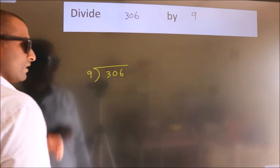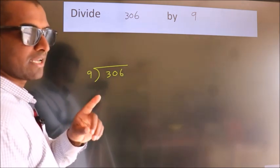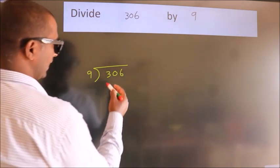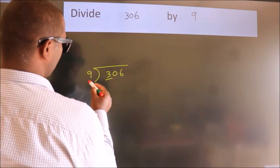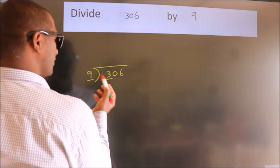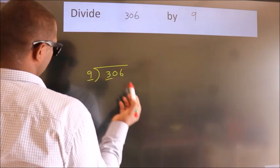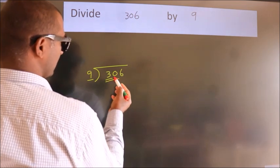This is your step 1. Next, here we have 3. Here 9. 3 is smaller than 9, so we should take two numbers, 30.